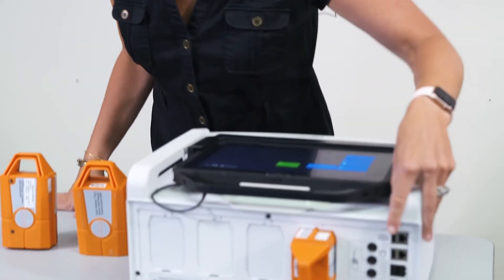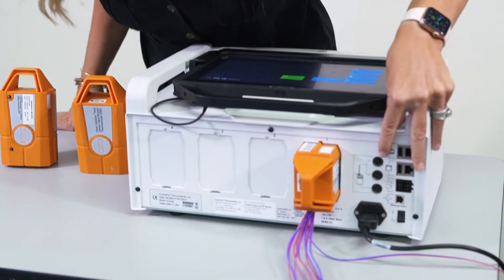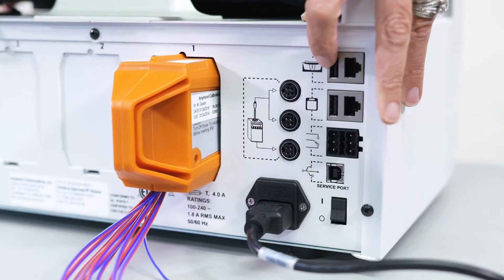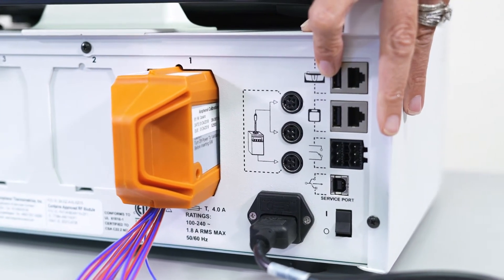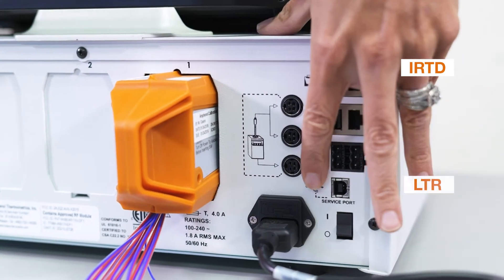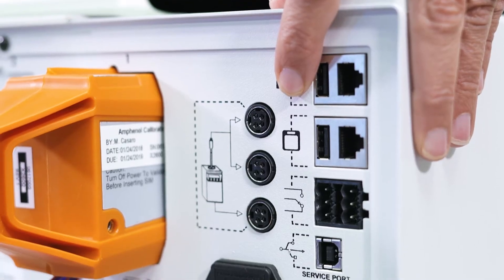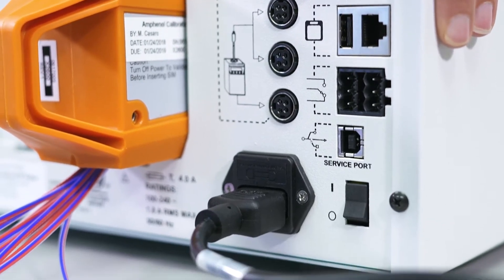Another thing that you'll notice on the back of the AVS is that we've upgraded our connections. So there's now a circular connection for your IRTD and your LTR. The AVS is also compatible with all the legacy K equipment, so there's no need to buy a new IRTD or temperature reference bath.